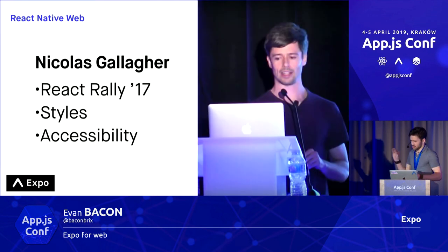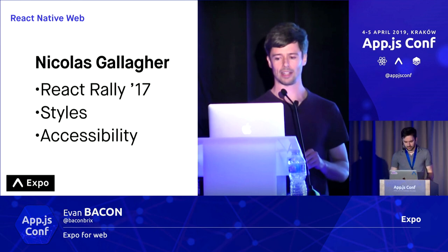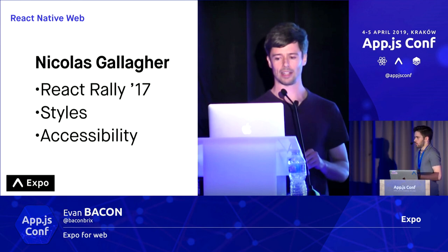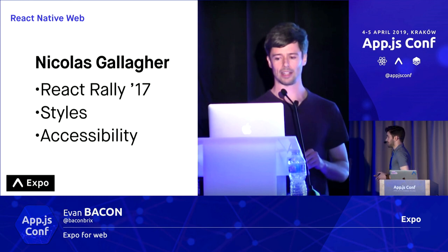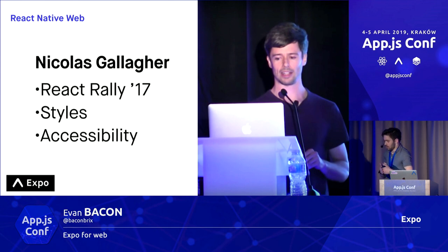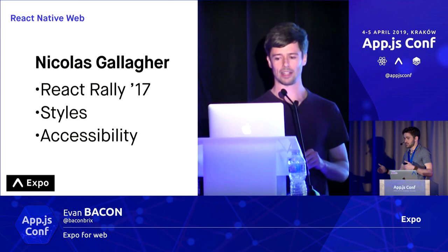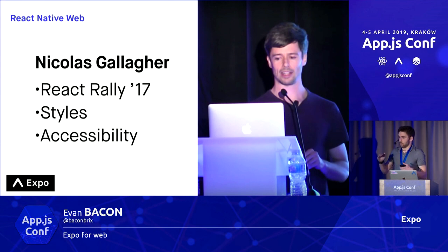I'm not going to get too much into how it works. If you're curious, Nick Gallagher has a really nice talk at React Rally about the stylesheet API, which is a very optimal CSS-in-JS library. He made normalized CSS, and has a nice benchmark test which demonstrates all the popular CSS-in-JS libraries and shows how the stylesheet library in React Native for Web is one of the fastest.